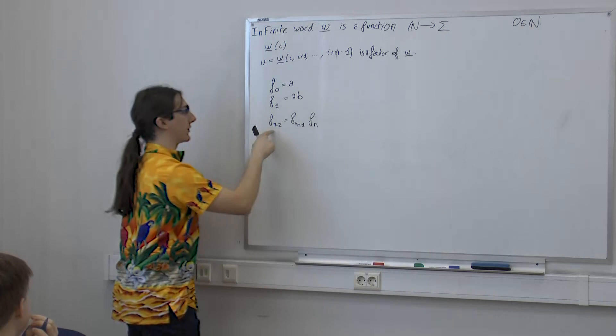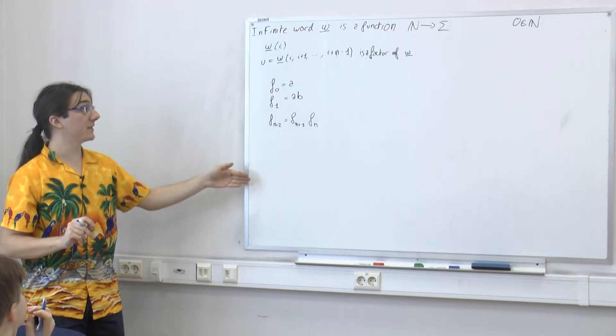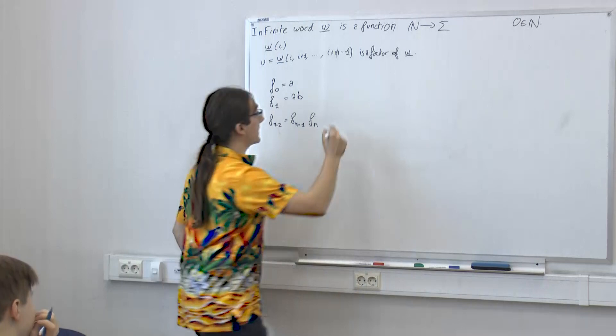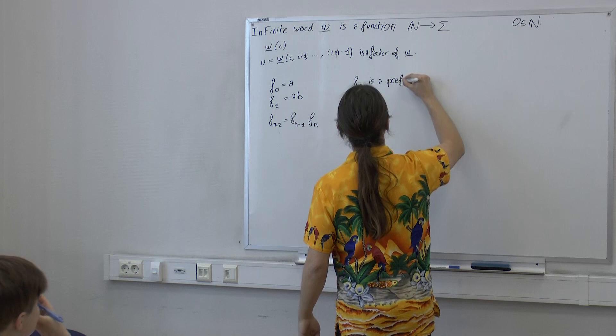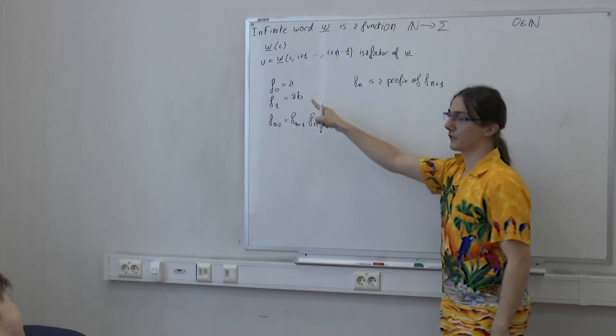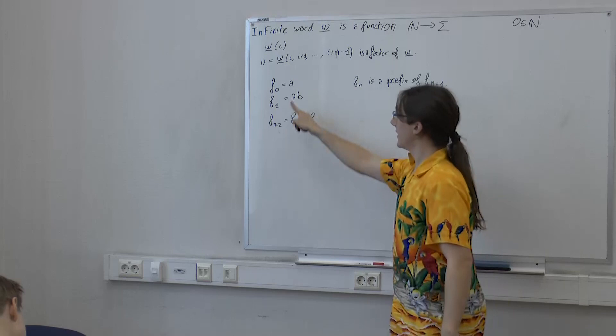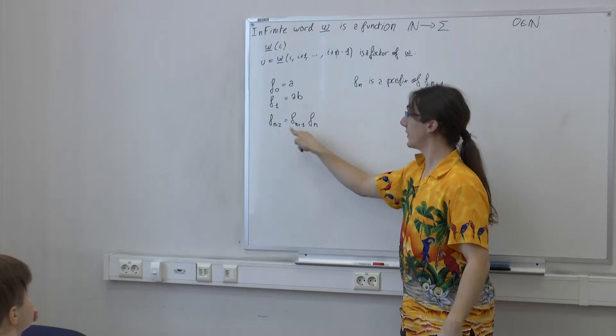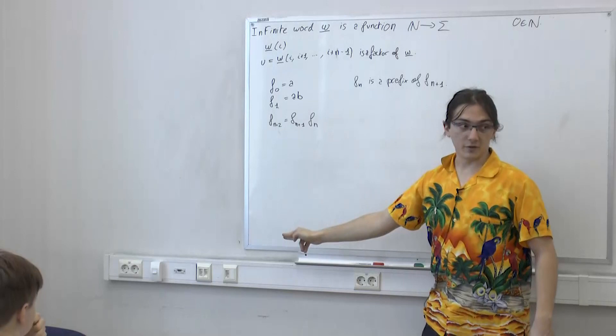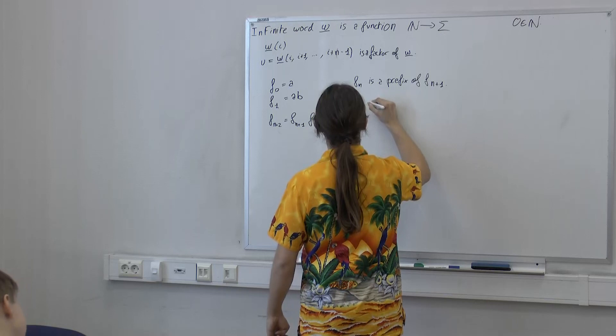So this is a sequence of finite words, and each time you observe that f_n is a prefix of f_{n+1} and the length grows. This means that everywhere in this sequence, the first letter will be a — it will never change. The second letter will always be b. If you evaluate f2, f3, and so on: f2 will be aba, f3 will be abaab, and so on to infinity.